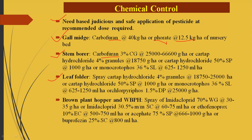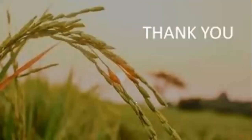For leaf folder, brown plant hopper (BPH), and white-backed plant hopper (WBPH): spray Cartap hydrochloride 4% granules or Chlorpyrifos at 25,000 gram per hectare. For brown plant hopper or white-backed plant hopper: spray Imidacloprid 70% WG granules at 30 to 35 gram per hectare. In examination, mention at least two or three pesticides with their doses against different pests. These are all the IPM practices for paddy. Thank you.